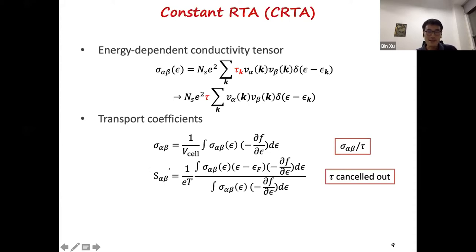But for Seebeck coefficient, it is a ratio of two integrals. So both integral has the sigma epsilon, so the constant tau can be cancelled out. However, constant tau can be cancelled out doesn't mean the k-dependent tau can be cancelled out, because it's inside the integral. So this is a big approximation, actually. This constant relaxation time approximation, because you only need to calculate the band energies and the band velocities, it is rather cheap compared with the more heavy electron-phonon coupling calculations. So it's popular and implemented in both BoltzTraP and Wannier90 codes.